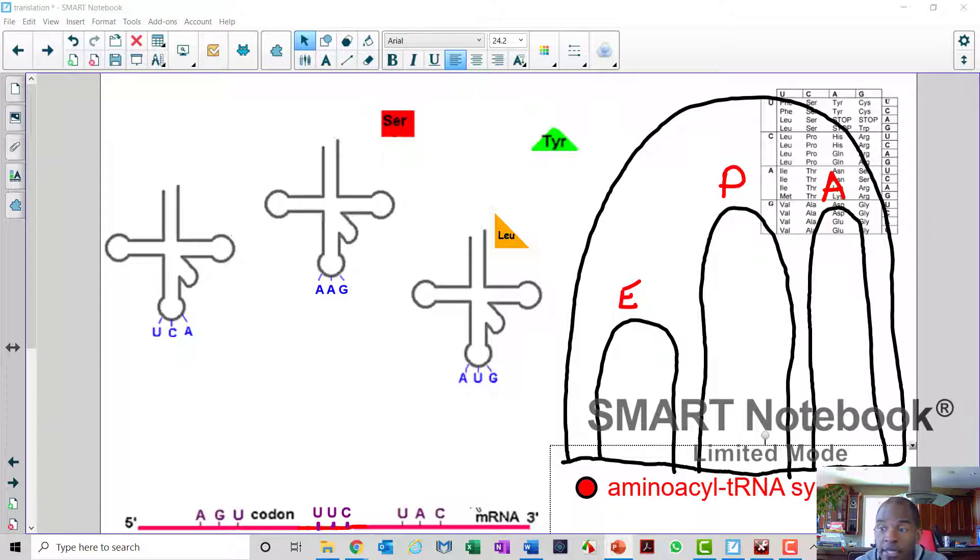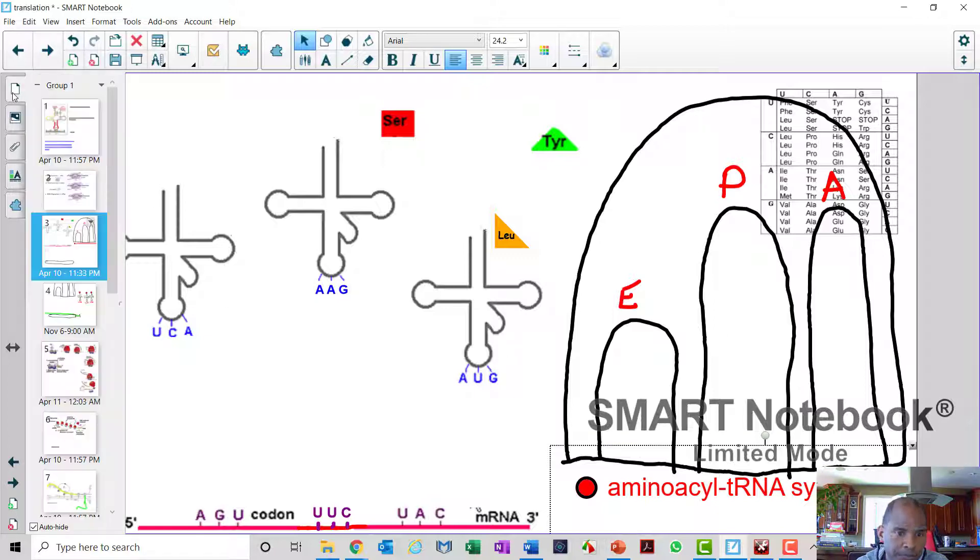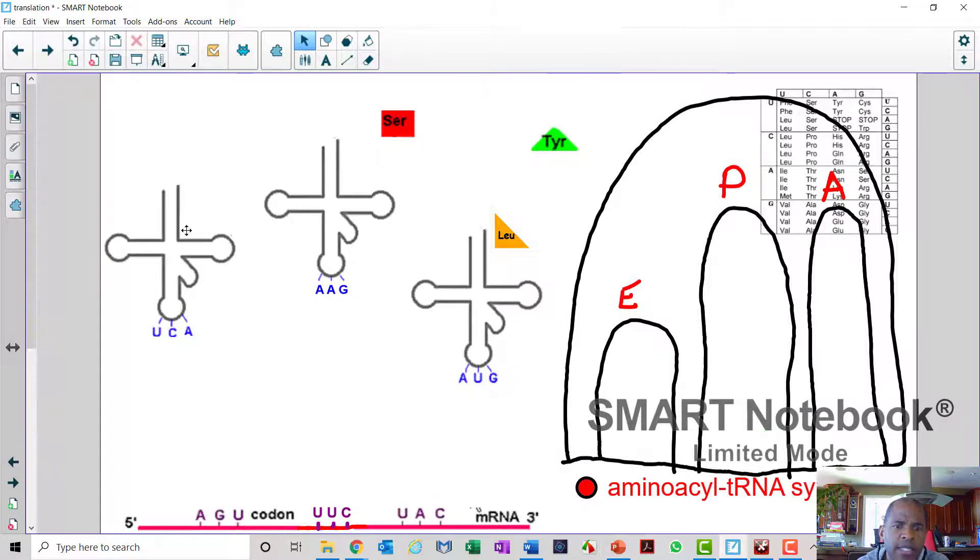The tRNA itself, so I kind of explained a little bit about its structure. So the structure we're good with, right? We've got the amino acid binding site, which is the long site, which is the 3'. The 3' is the longer, the 5' is the shorter. We have these arms, and we have an anticodon.